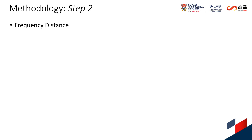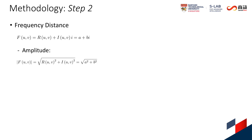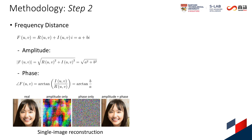We then define a frequency distance to quantify the differences between images in the frequency domain. We rewrite the frequency representation f_uv into a plus bi. There are two key elements in f_uv. The first is amplitude, which manifests energy — how strongly an image responds to the 2D sine wave with a specific frequency. The second is phase, which represents the shift of a 2D sine wave from the wave at the beginning of a cycle. A frequency distance should consider both amplitude and phase. Through a simple single image reconstruction experiment, we show that full reconstruction can only be achieved by considering both amplitude and phase information.